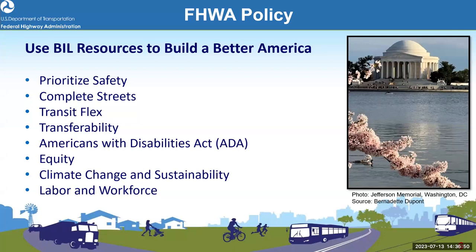This guidance incorporates Federal Highway's eight policy principles on using the bipartisan infrastructure law to build a better America, found on pages four through eight of the guidance. First, we want to prioritize safety in all investments and projects — building on the national roadway safety strategy and the safe system approach.